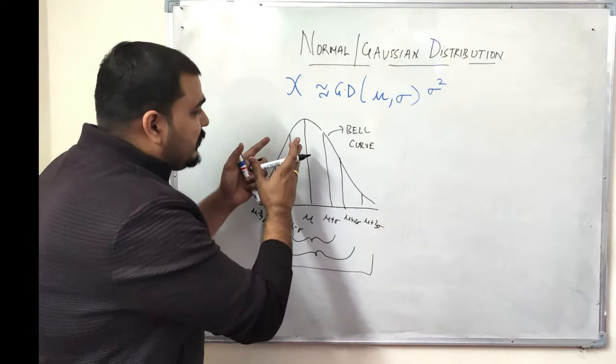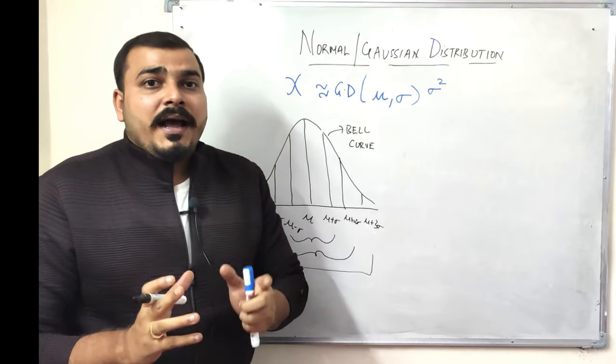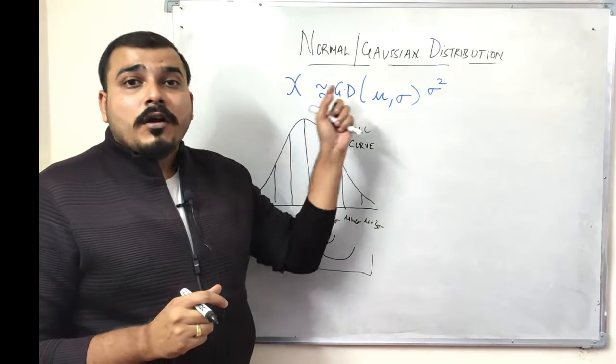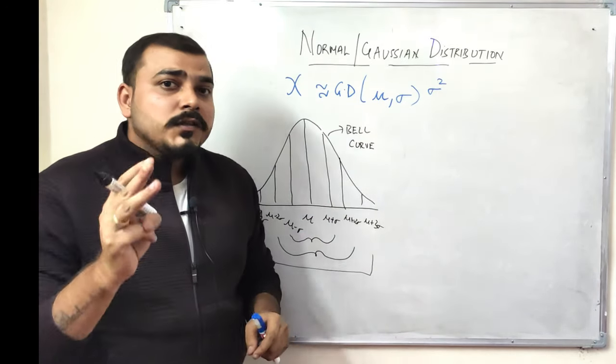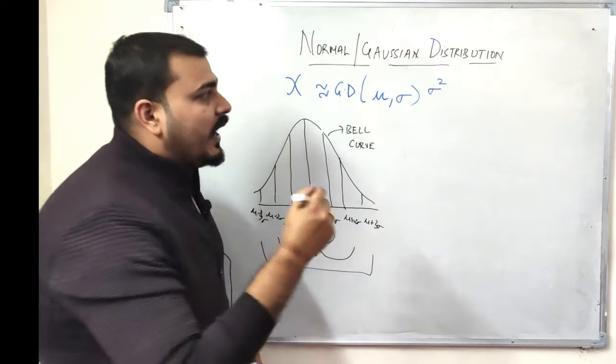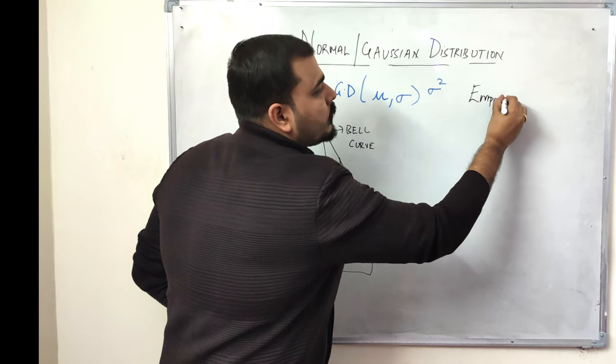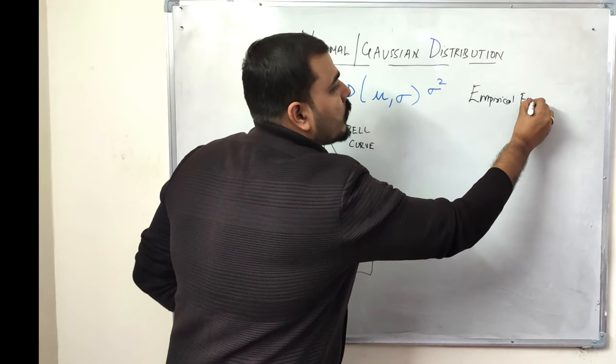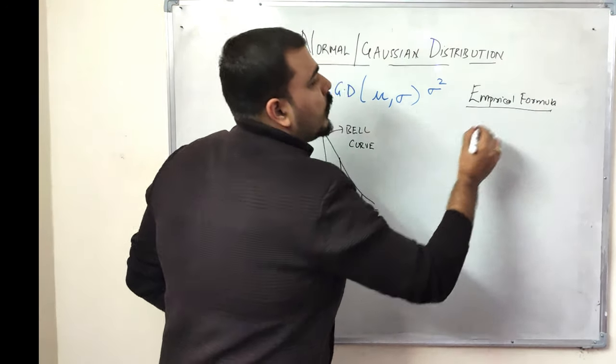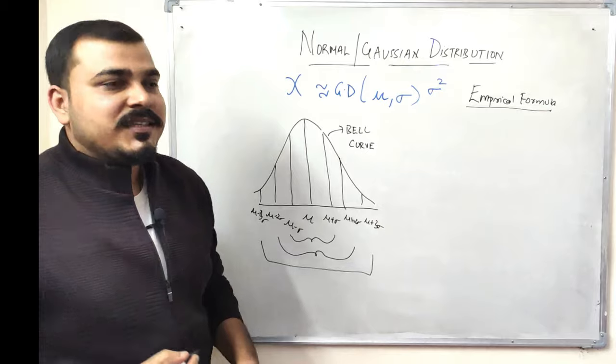Now this bell curve is very important, and if this random variable follows a Gaussian distribution it also has three properties. These properties are called empirical formula. Now what does this empirical formula specify?